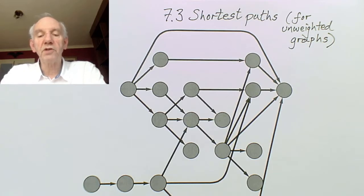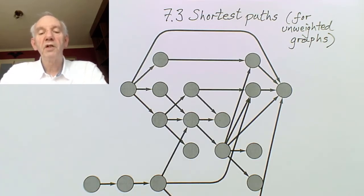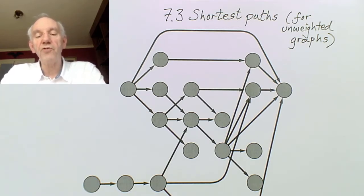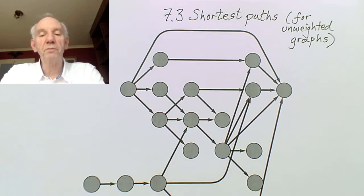But today I just want to do a special case in which the edges don't have weights. In the general situation we shall assign numbers or weights or distances or costs to each edge. But for the moment I just want to take each edge as counting as one unit, so we just have an ordinary graph and we want to find the shortest path from one vertex to another, meaning the path with the least number of edges.